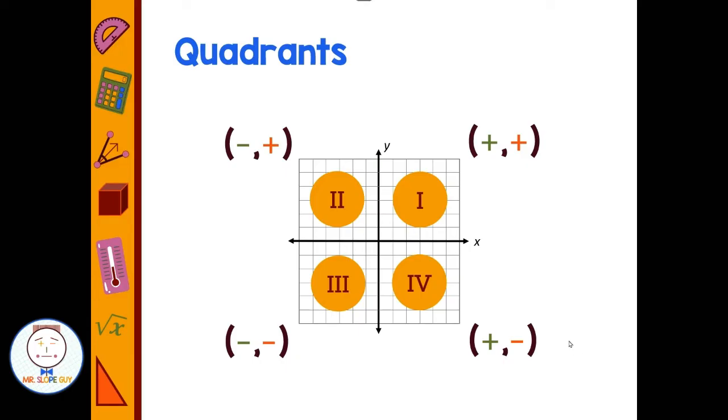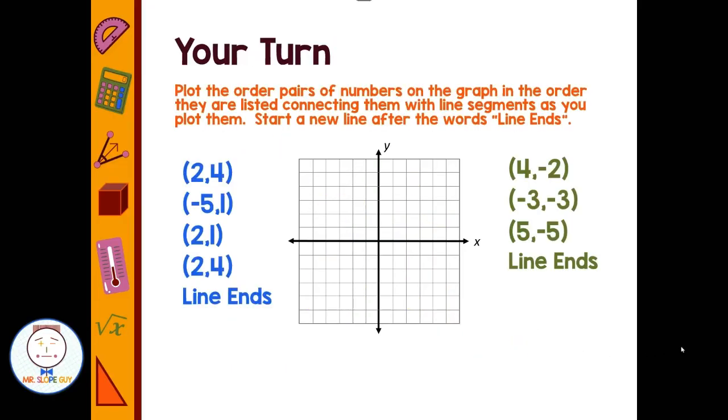So hopefully that helps you get an idea where your points start. So let's see if you guys can put some of this together. Let's look at what some directions for a fun activity might look like. Let's say you have plot the ordered pairs on the graph in the order they are listed, connecting them with line segments as you plot them. Start a new line after the words 'line ends.'